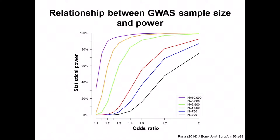The ability to identify a significant association depends quite a lot on sample size. With odds ratios on the x-axis and statistical power on the y-axis, different colors represent different sample sizes. In a more modest sample size, only the strongest effects — variants with the highest odds ratios — can be detected. As sample sizes get larger, there's quite good power to detect associations with more modest odds ratios.